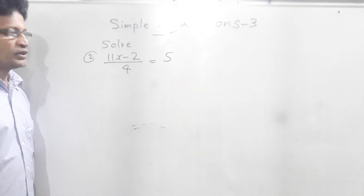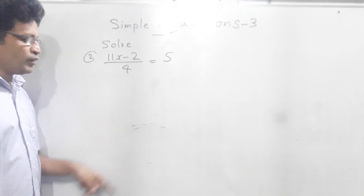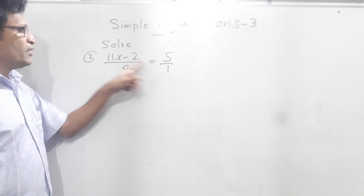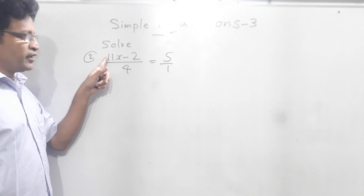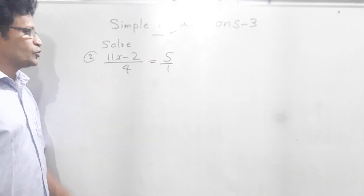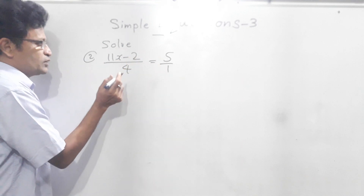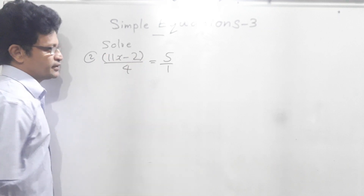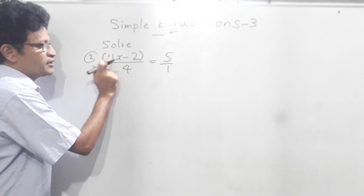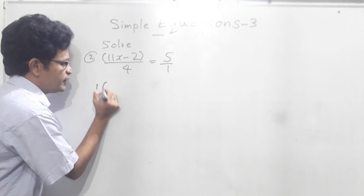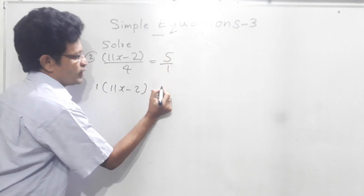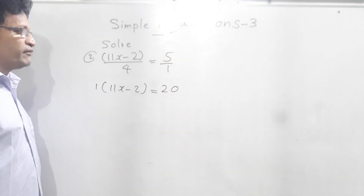Now how we are going to do this question. 5 means 5 over 1. We can write that. Then 1 and (11x minus 2) we have to multiply, and 4 and 5 we have to multiply. It is like cross multiplication. So therefore, I can put a bracket here. Then 1 into (11x minus 2) equals 4 times 5, that is 20. This is called cross multiplication.